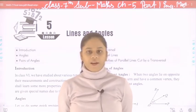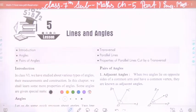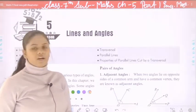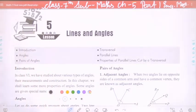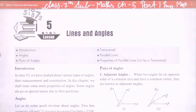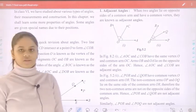Hello everyone, welcome to the online classes. Today we will start Chapter 5 — Lines and Angles. In this chapter we will understand introductions, angles, pair of angles, transversals, parallel lines, and properties of parallel lines cut by a transversal. In Class 6 we studied various types of angles, their measurements and construction. In this chapter we shall learn some more properties of angles. Some angles are given special names due to their positions. Let us do a quick revision about angles.